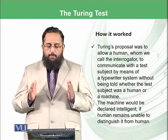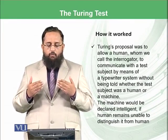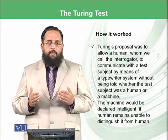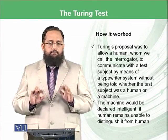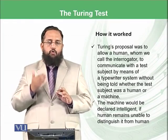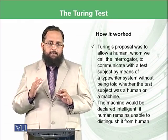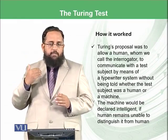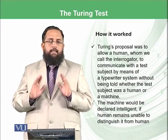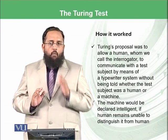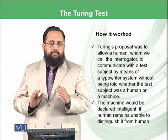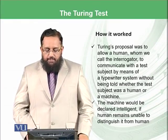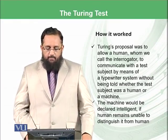How it worked? The Turing proposal was to allow a human, whom we can call the interrogator, to communicate with the test subject by means of a typewriter. The human is sitting and writing commands, and on the other end there could be a human or there could be an intelligent agent. If the actual human who is typing the commands remains unable to distinguish when there was a human and when there was a machine or intelligent agent, this means you have made a perfect or accurate AI system. The machines would be declared intelligent if humans remain unable to distinguish them from humans.